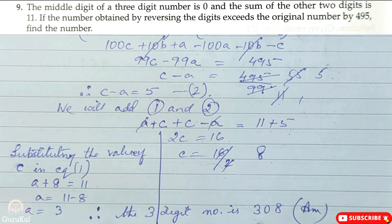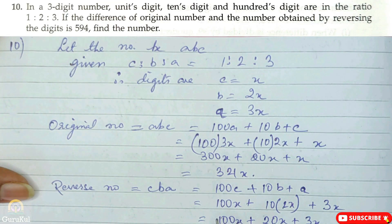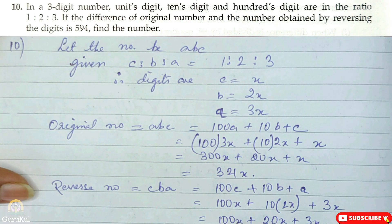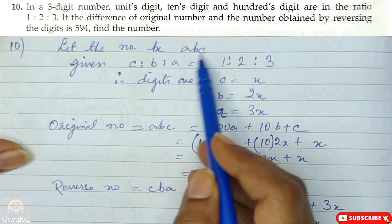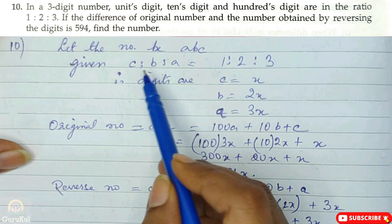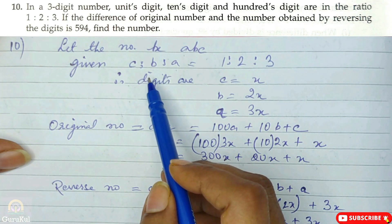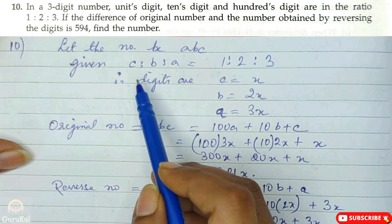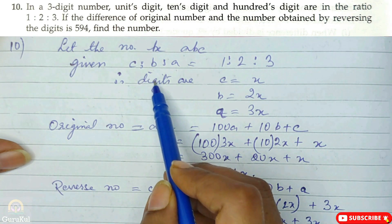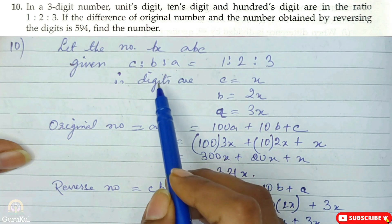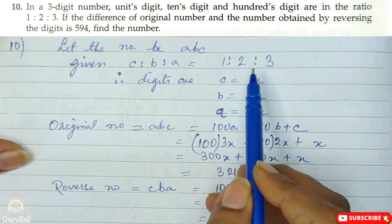Question number 10: in a three-digit number, the unit digit, 10th digit, and 100th digit are in the ratio 1 : 2 : 3. Let the three-digit number be A, B, C. Given C : B : A = 1 : 2 : 3, because the question lists unit digit first, then 10th digit, then 100th digit.